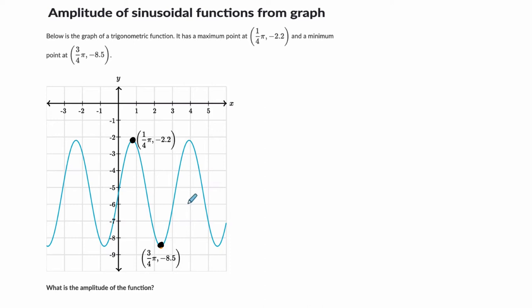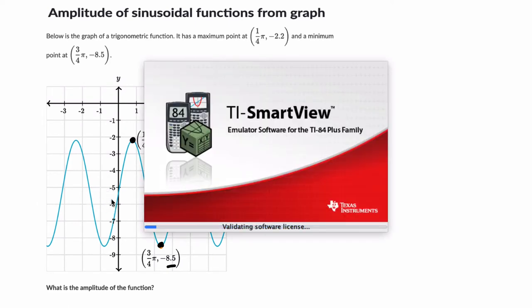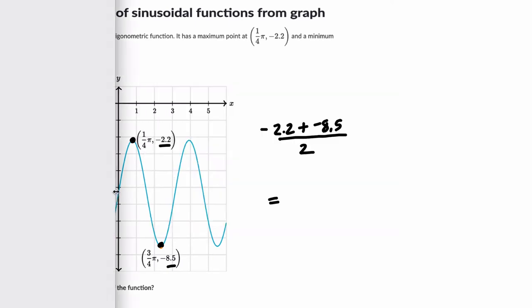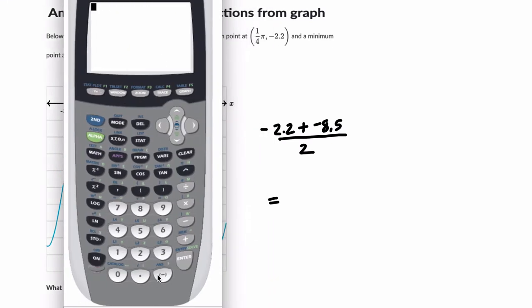So how do we find the middle? Well we average the heights of our max and min, so negative 2.2 plus negative 8.5 divided by 2. Let's see what that is, pull up my calculator here, let the program load. Negative 2.2 plus negative 8.5 divided by 2.